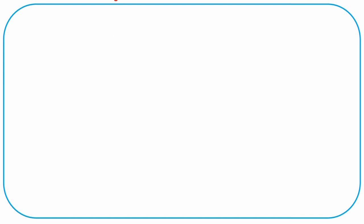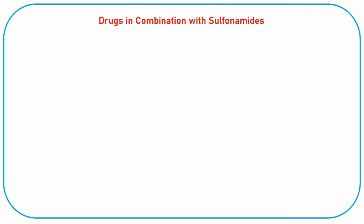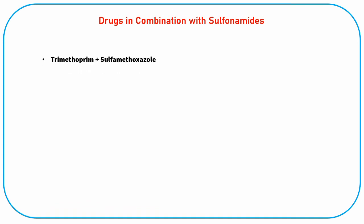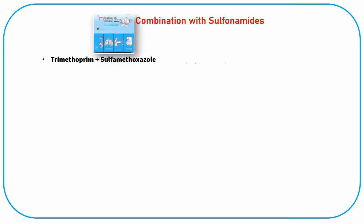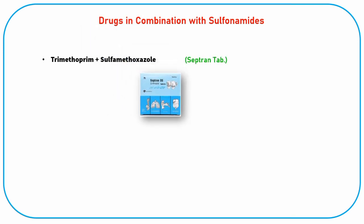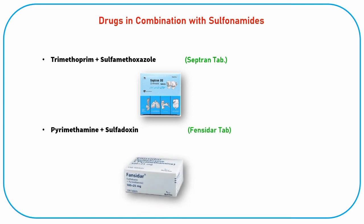Drugs in combination with sulfonamides include trimethoprim plus sulfamethoxazole, present in Septrin tablet, and pyrimethamine plus sulfadoxine, present in Fansidar tablet.